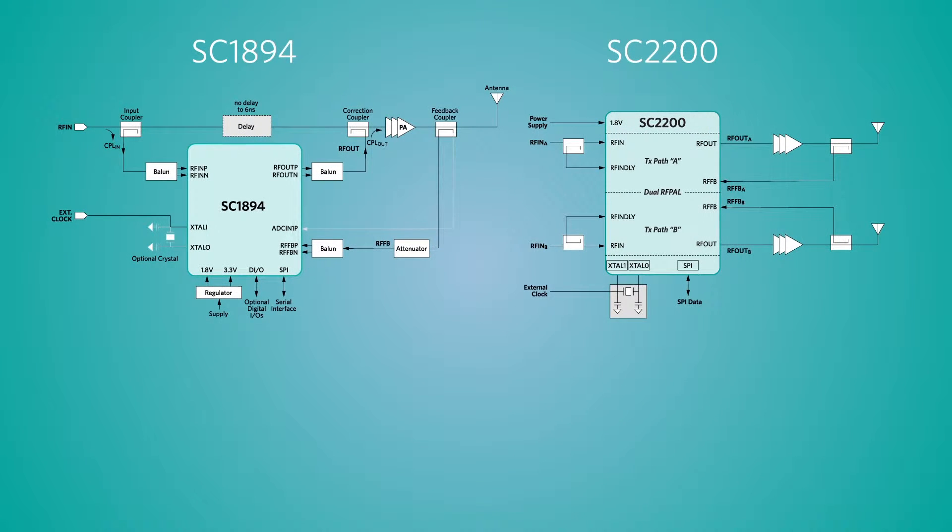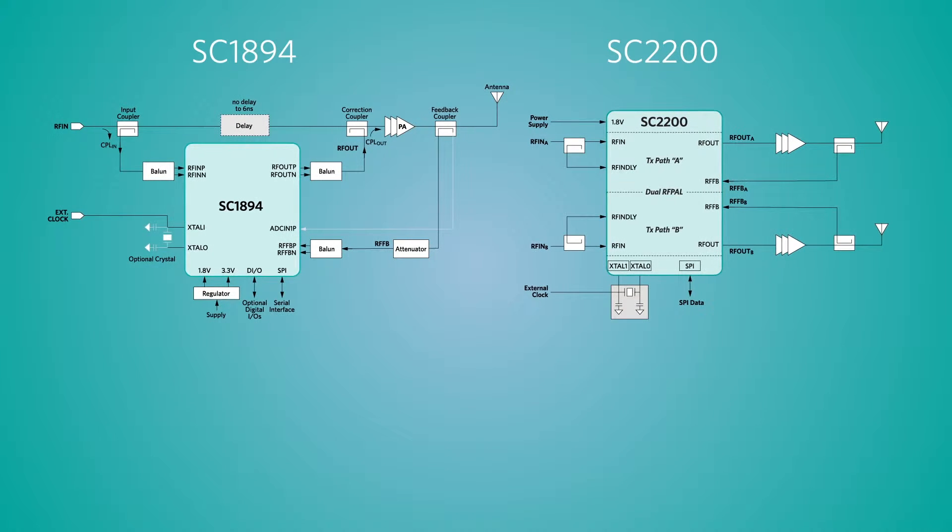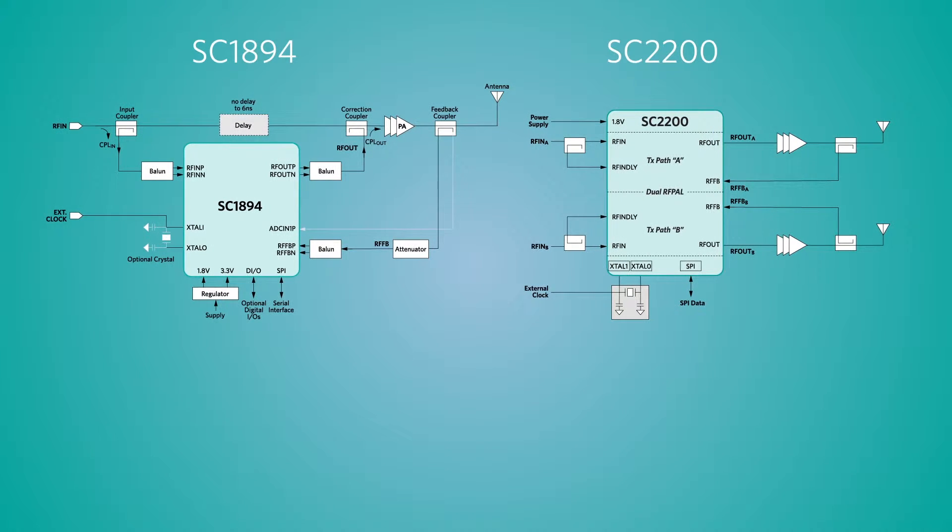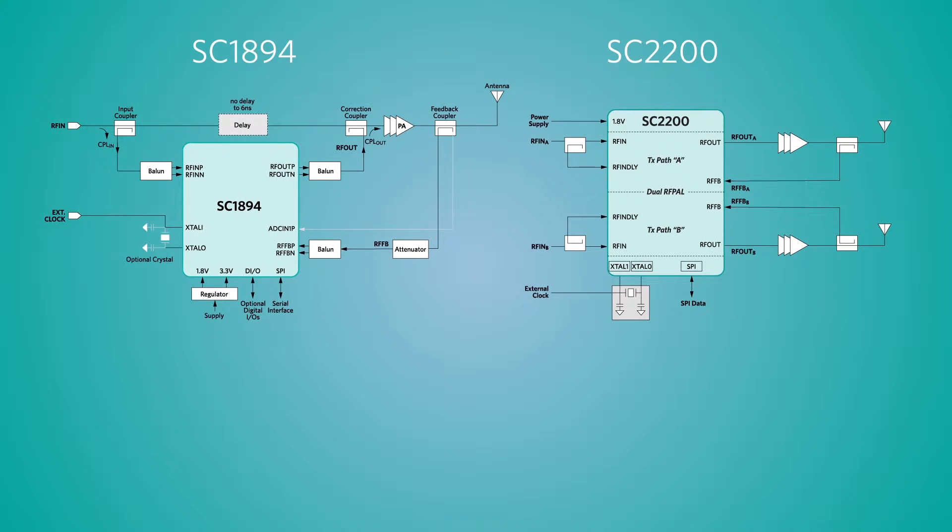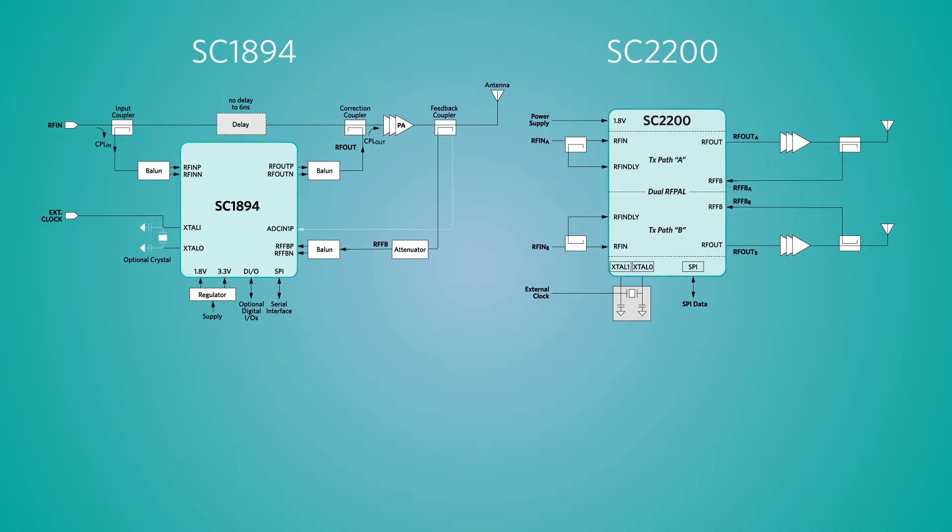Introducing Maxim's Breakthrough RFPA Linearization Technology. SC-1894 is widely deployed in millions of base stations. SC-2200 is a newly released device providing dual-channel linearization.